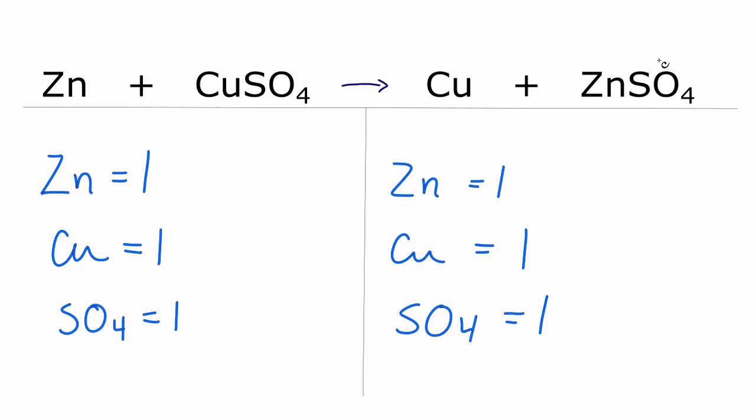If I was asked to report the coefficients I could say one, one, one, one, but you don't really have to write that in because it's implied. This is Dr. B with the balanced equation for zinc plus copper 2 sulfate yields copper plus zinc sulfate, and thanks for watching.